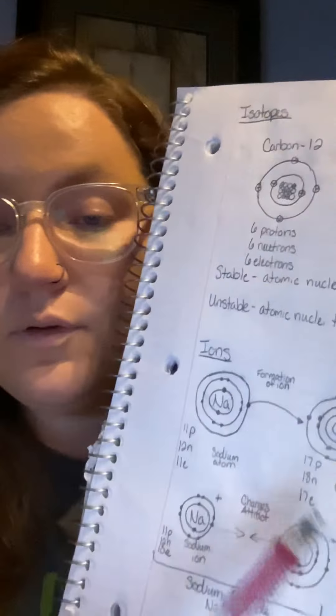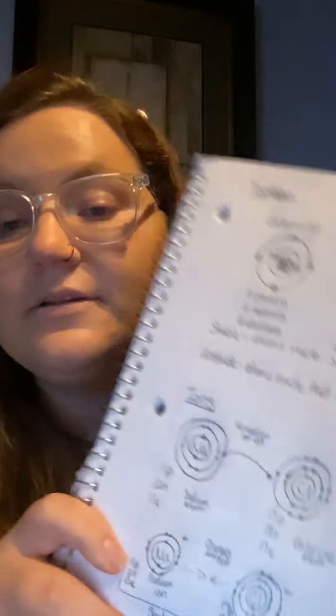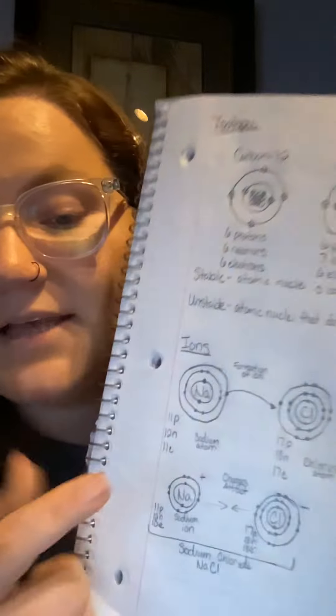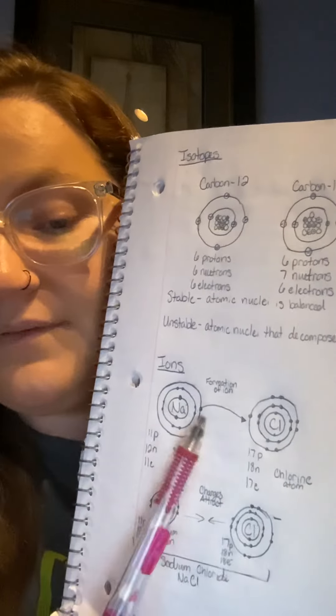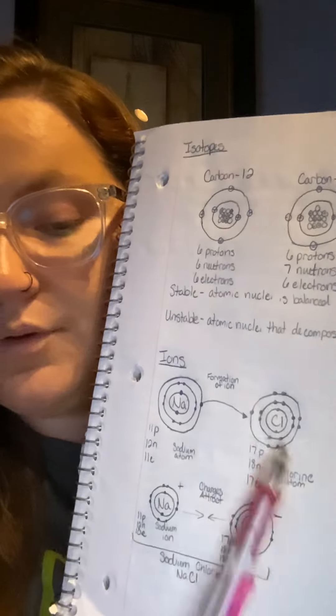And atoms are most happy, I guess I would say, when their outermost shells are filled. So the best way that sodium and chlorine fill their outer shells is that the sodium will then give up an electron to the chlorine.